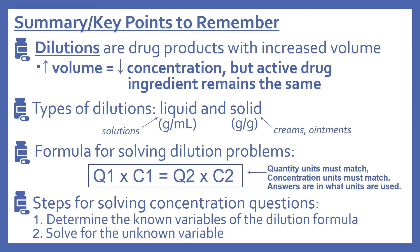To summarize the key points about dilutions: Dilutions are drug products with increased volume, which decreases the concentration, but the active drug ingredient remains the same. Types of dilutions include liquid (grams per milliliter) and solid, which includes creams and ointments. The formula for solving dilution problems is Q1 times C1 equals Q2 times C2, where Q stands for quantity and C stands for concentration. Quantity units must match, concentration units must match, and your answer will be in whatever units are used. Steps: first determine the known variables, then solve for the unknown variable.